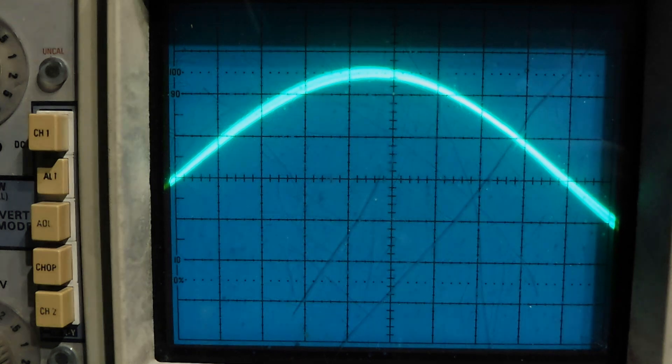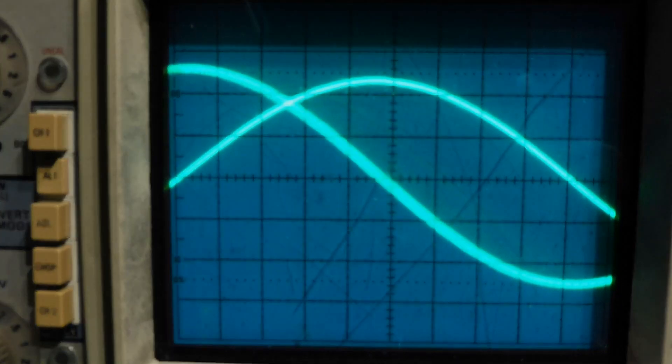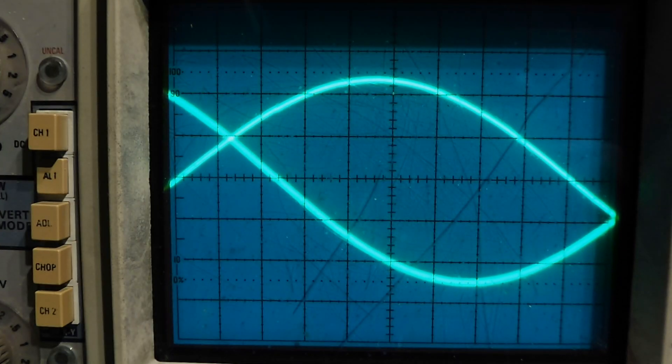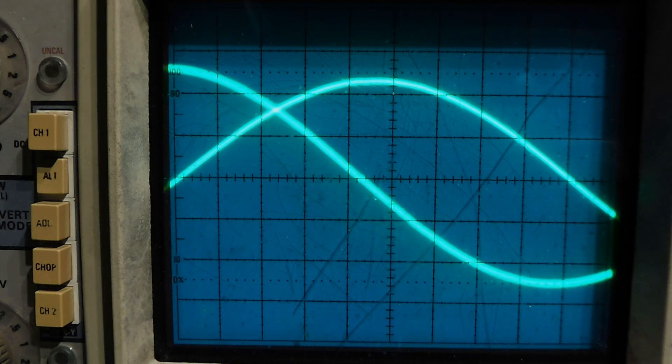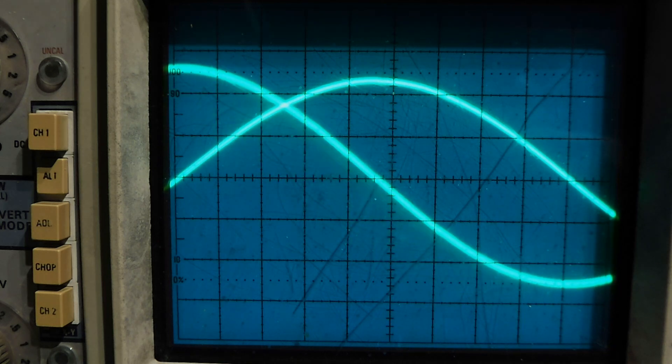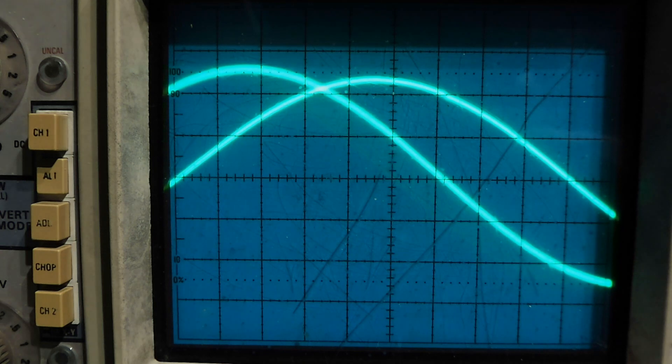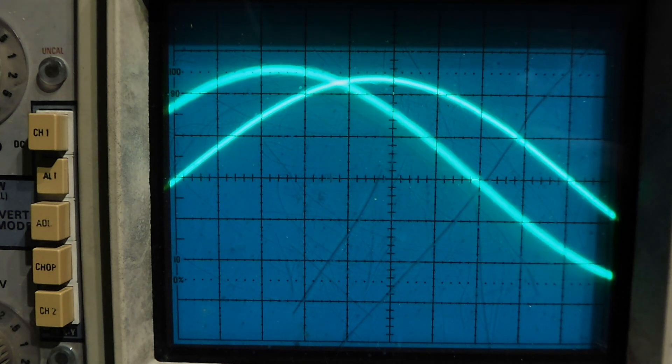If you guys don't have a digital scope, there's nothing wrong with a good analog scope if you're getting started in electronics. There's a lot of them out there and they're very inexpensive. You can do a lot with an analog scope. You don't have to worry about getting the best digital, expensive scope that you see being featured on some of the YouTube videos.